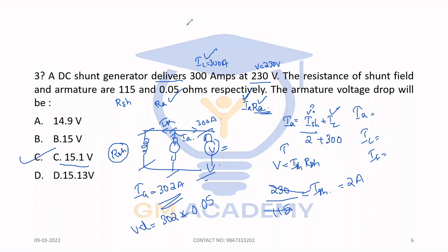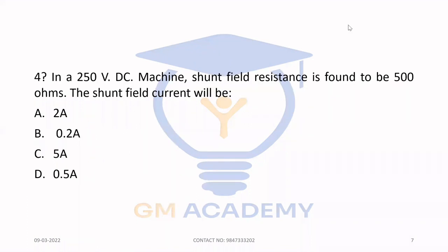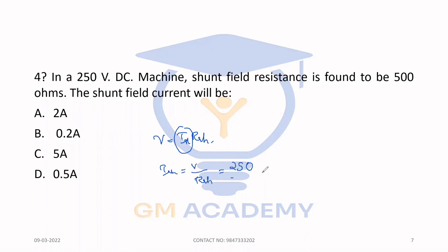The answer is 15.1 volt, which is the correct answer. Next: In a 250 volt DC machine, the shunt field resistance is 500 ohm. The field current ISH = V / RSH = 250 / 500 = 0.5 ampere. Option D, 0.5 ampere, is the correct answer.